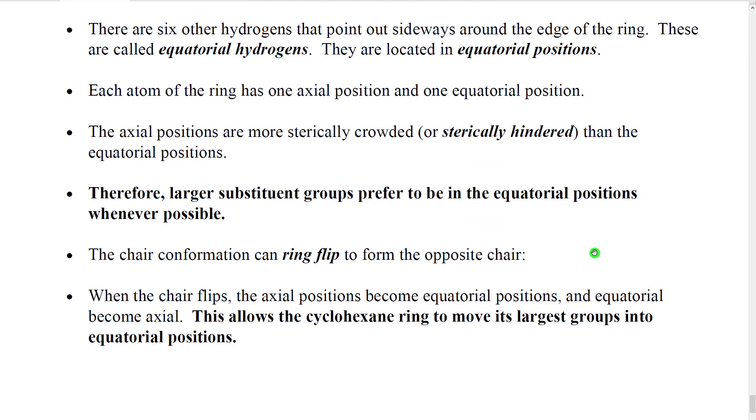So what we can see then is that when we have a given six-membered ring, the most stable conformation is going to be the chair that has the large groups, the largest number of large groups in the equatorial positions.